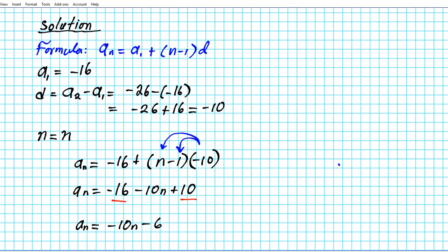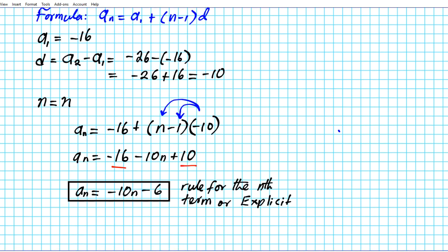Okay, so this, ladies and gentlemen, is the rule for the nth term. So let's write that down: aₙ = -10n - 6. This is the rule for the nth term, also known as the explicit formula.